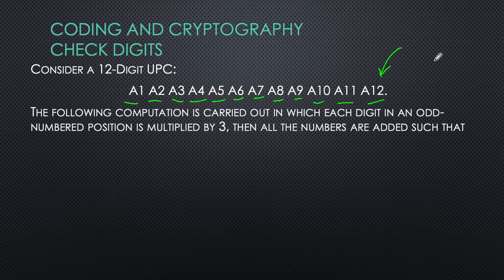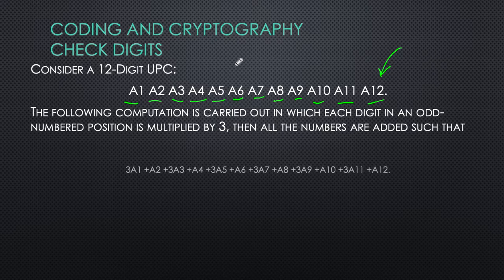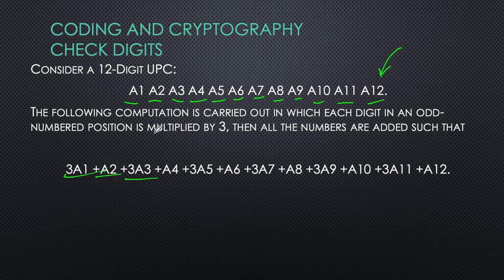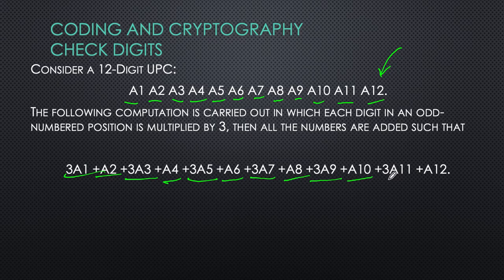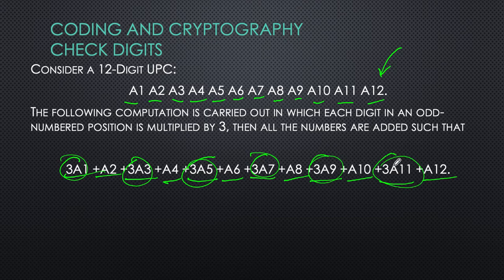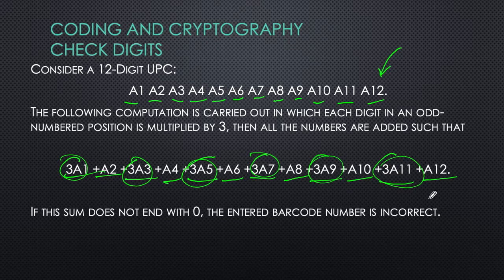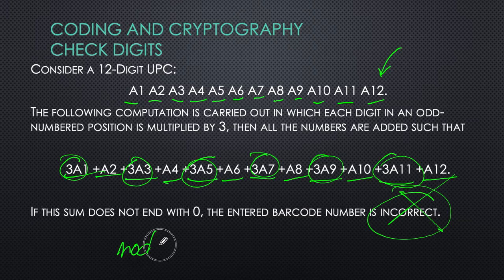The following computation is carried out: each digit in an odd-numbered position is multiplied by three, then all numbers are added. So the formula is: 3a₁ + a₂ + 3a₃ + a₄ + 3a₅ + a₆ + 3a₇ + a₈ + 3a₉ + a₁₀ + 3a₁₁ + a₁₂. All odd-position digits are multiplied by three. If the sum does not end with zero, the barcode is invalid. The sum must be divisible by 10 — that is, the sum modulo 10 must equal zero.